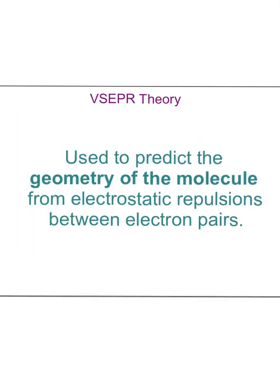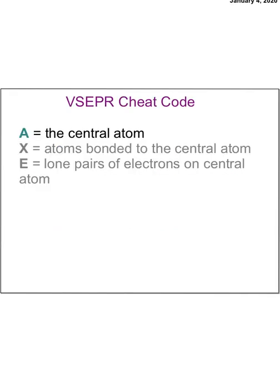Why do we use VSEPR theory? We use it to predict the geometry or the shape of a molecule. It's all about this idea that electron pairs repel each other — they want to give themselves as much room as humanly possible. There are lots of different shapes that molecules can make, so I came up with a cheat code to help figure out what it might be.